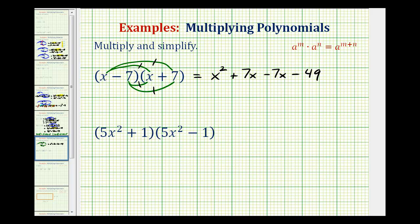If we take a look at the middle terms, we have plus seven x minus seven x. These are like terms, but when we combine them we get zero. So we're left with x squared minus forty-nine.